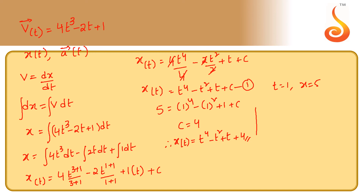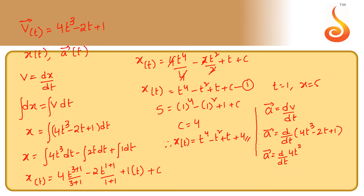We also need to calculate acceleration. Acceleration equals dv/dt. So acceleration equals d/dt of (4t³ minus 2t plus 1), which gives 12t² minus 2. Since d/dt of 1 equals 0, the acceleration as a function of time is a(t) = 12t² minus 2.